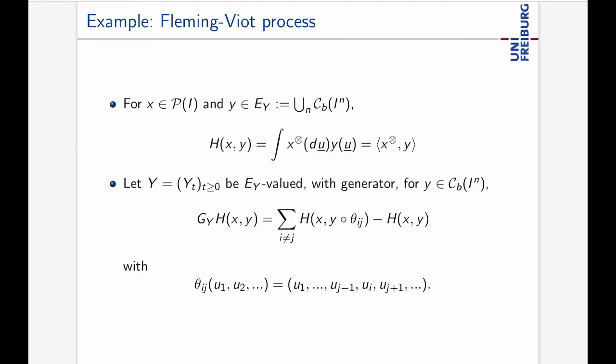We need a process a Markov process Y, we need a state space for our process X and we need a duality function and here the state space of X is the set of probability measures on the unit interval. We have for the process Y a process which takes values in functions so the state space here is the function space so any continuous functions of an n-fold product of the unit interval and the H here just integrates the Y here over the product measure of X and if the Y is in I to the n then you need the n-fold product measure which are just abbreviated here like this.